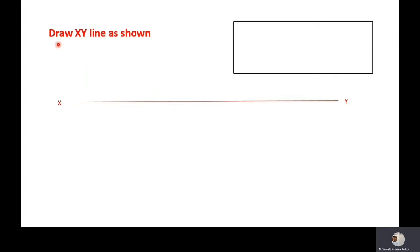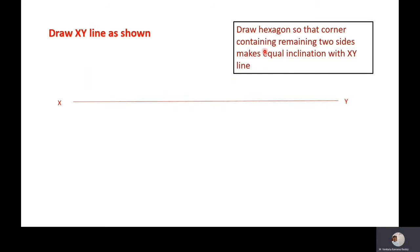As a first step, draw the XY line. After drawing the XY line, draw the hexagon so that the corner containing the remaining two sides makes equal inclination with the XY line.